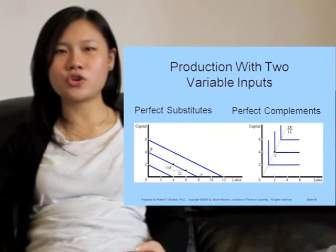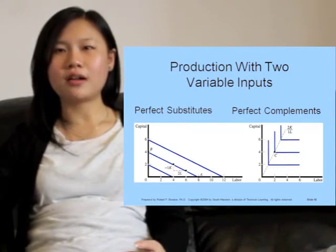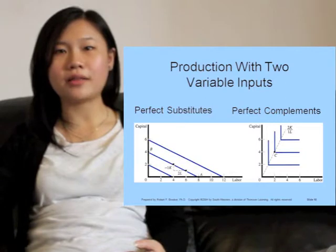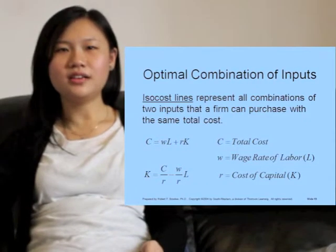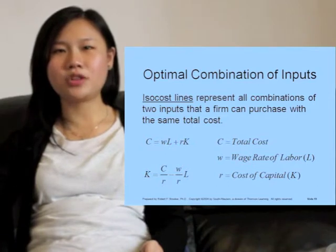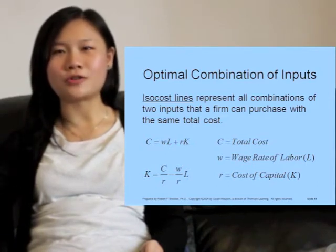When an isoquant is a straight line, the inputs are perfect substitutes, while for right-angled isoquants, labor and capital are perfect complements. To determine the optimal input combination, we can use isoquants and isocost lines.